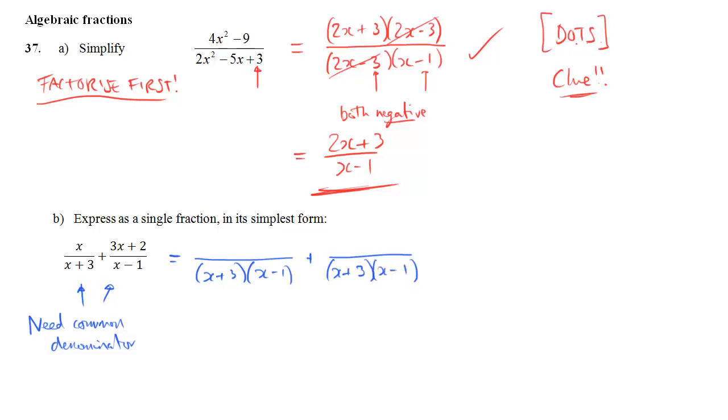Now to make x over x plus 3 have x minus 1 on the bottom, it's going to have to have x minus 1 on the top as well. So we multiply the x by x minus 1. And conversely, the second one, 3x plus 2 on the top, that has to be multiplied by x plus 3 so that there can be an x plus 3 on the top and the bottom.